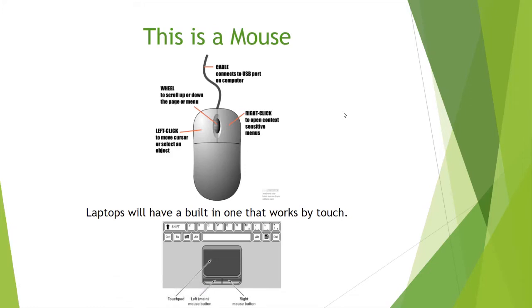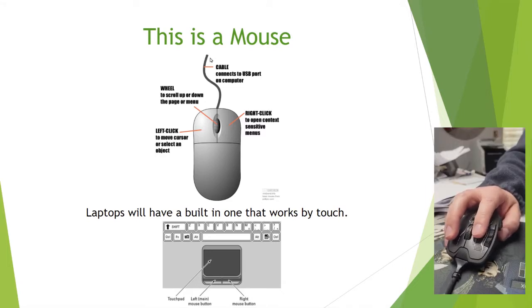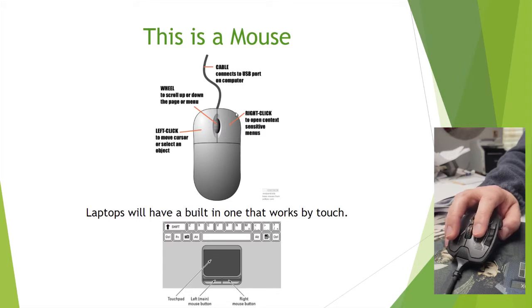Let's learn how to use a mouse. This is the desktop mouse, the one that you can move around. Sometimes they come with a cable, sometimes they don't. Generally mice have three buttons — some have more — but you're going to have mostly three buttons: the left click, right click, and the wheel.